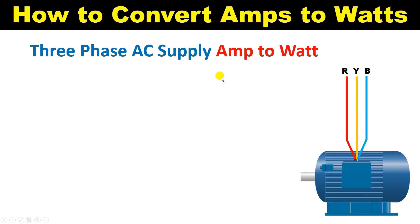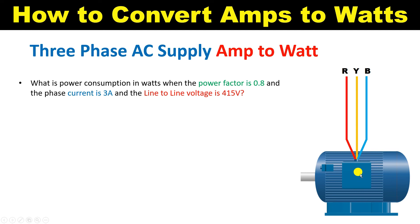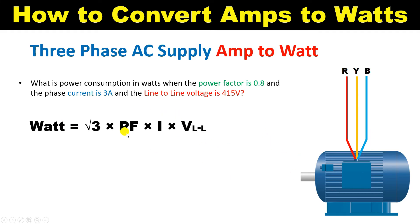Now let's talk about three phase power supply. Suppose I have a motor with three phase power supply connected. After connecting the power supply, the power factor is 0.8, current is 3 ampere, and the operating voltage is 415 volt line-to-line. To find the power rating, we use the formula: Watt = √3 × Power Factor × Current × Voltage (line to line).